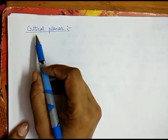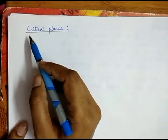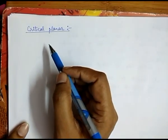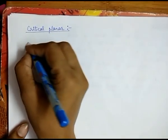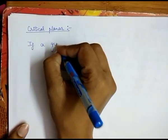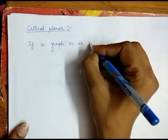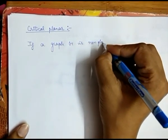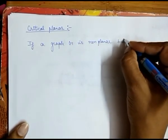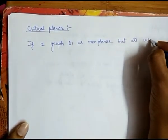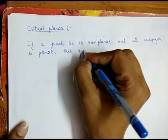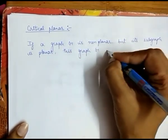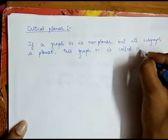Friends, now we discuss a short topic which is based on a planar graph. As already discussed what a planar graph is in my previous video, now we explain what is a critical planar graph. If a graph G is non-planar but its subgraph is planar, then this graph G is called a critical planar graph.